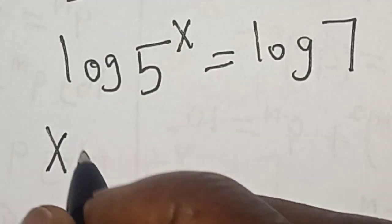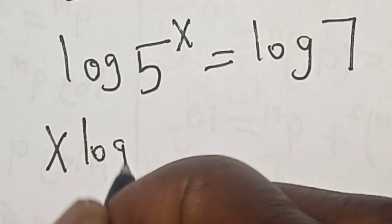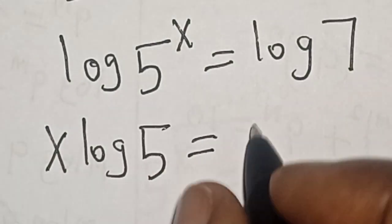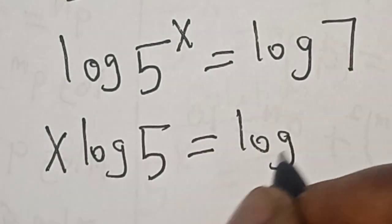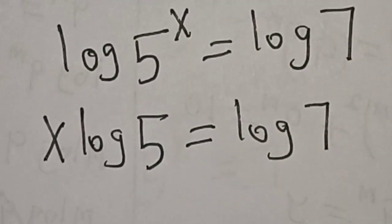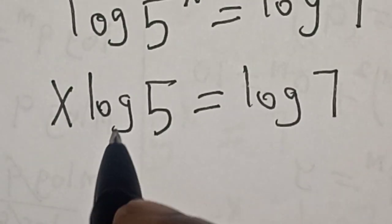Then this is s log 5 equals log 7. But we are looking for the value of s, so let's divide both sides by log 5.